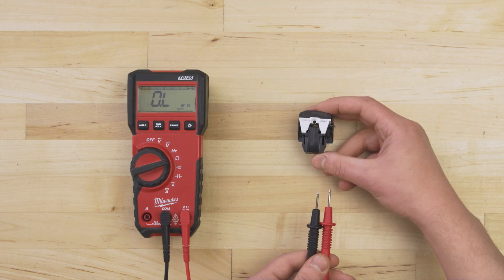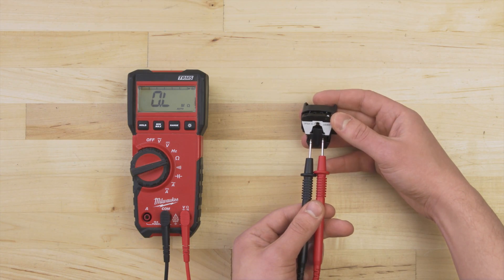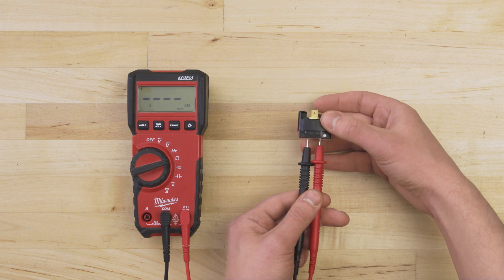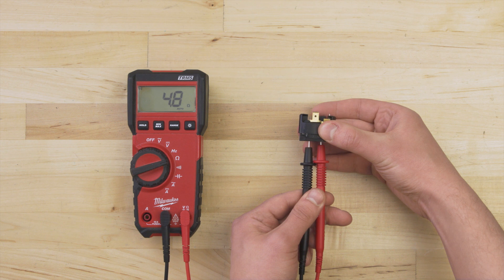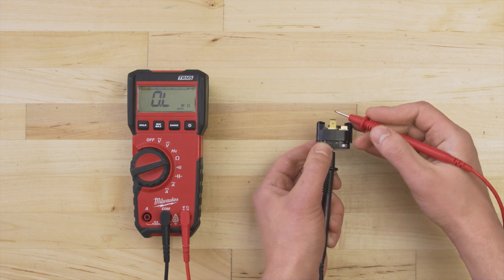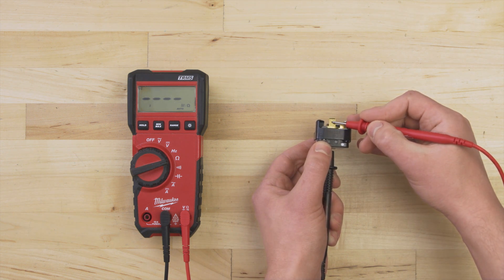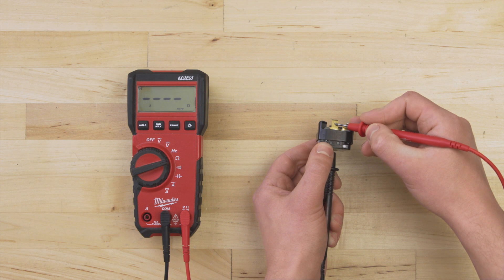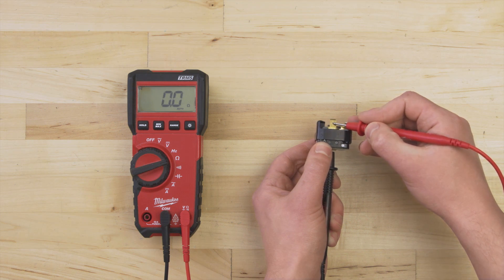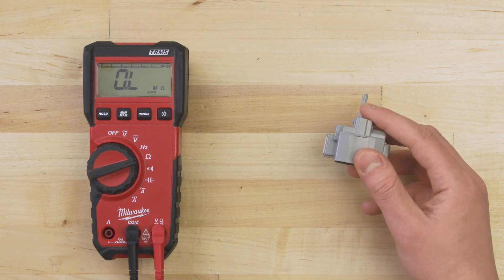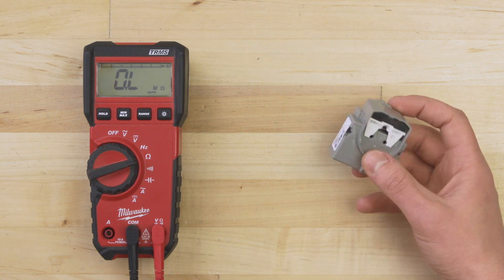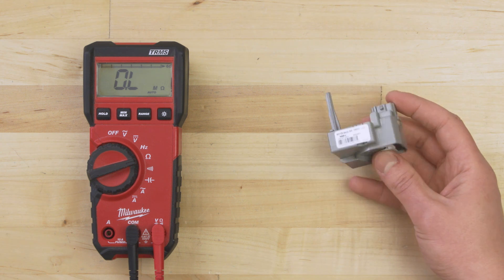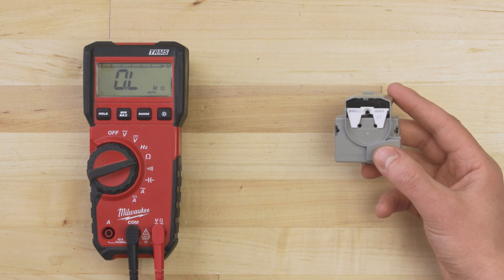To test the combination relay, the steps are the same. You can also test the overload protector to see if it's faulty. Some newer style relays use a small circuit board. These can't be easily tested, but you can still check for burn marks or any visible damage.